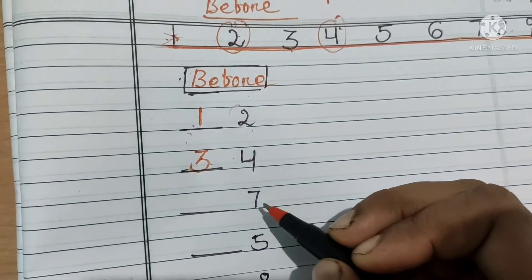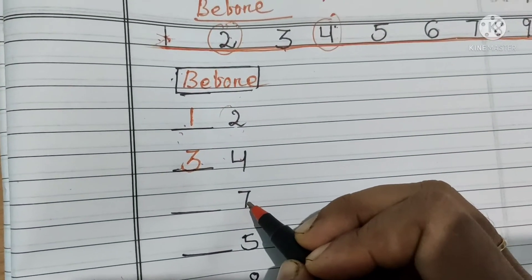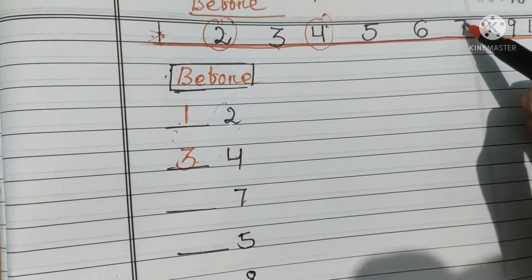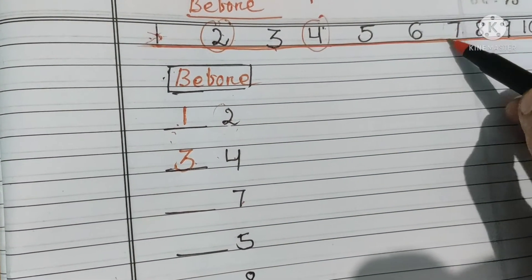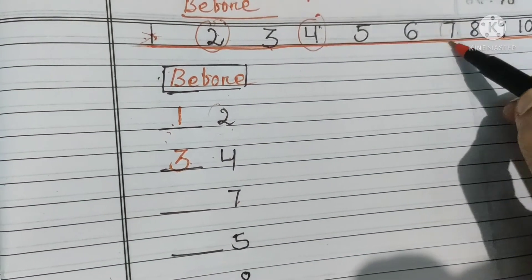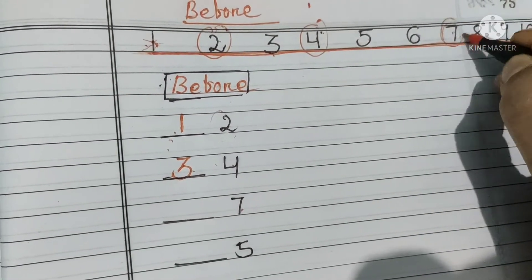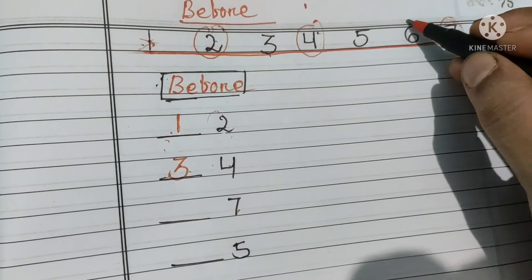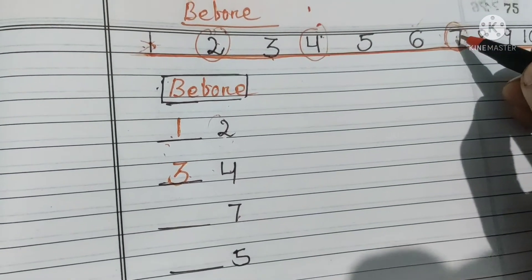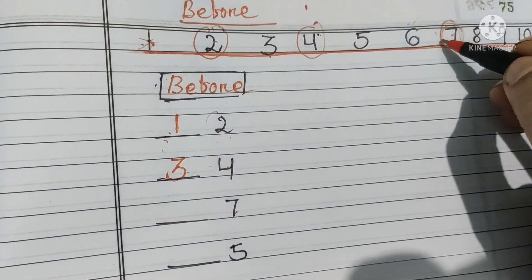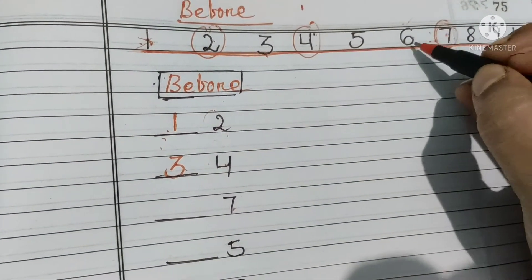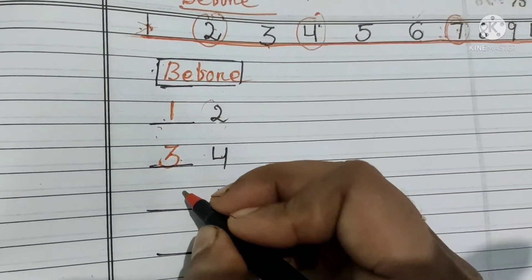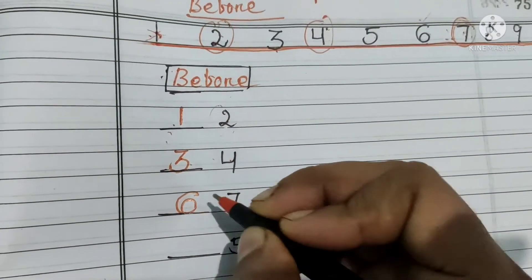Abhi aya number 7. To number line mein pehle dekh lete hain, number 7 kidhar hai? Here is number 7. Number 7 se pahle konsa number aata hai? Number 6 aata hai. What comes before number 7? Number 6. Our answer is number 6.